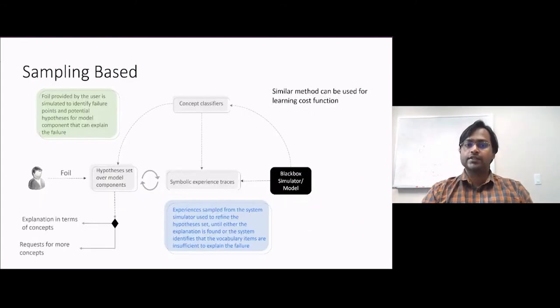The actual algorithm that our system uses is illustrated in this slide. The algorithm consists of the system starting with a hypothesis set over possible model components it could use for the explanation. Then, this hypothesis set is refined by leveraging various experiences that can be sampled from the system's true model or the simulator that the system was using.